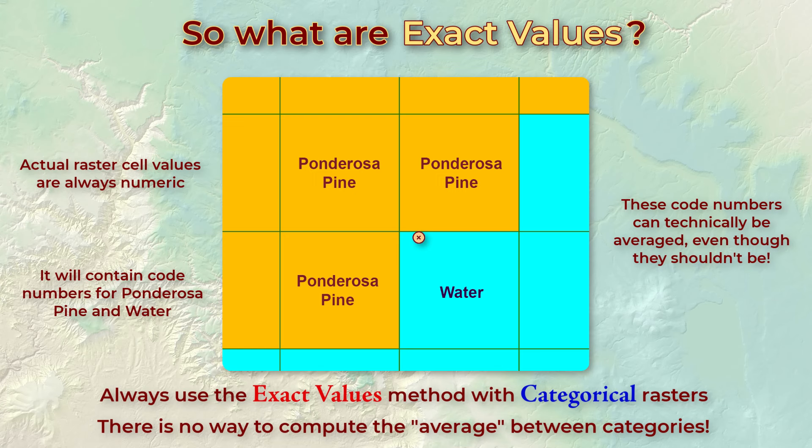So suppose ponderosa pine has a code value of 10 and water has a code value of 50. If you run an interpolation, you'll end up with a value around 21 or 22 at this point, with a lot of decimal points after it. And that almost certainly won't match any of the available land cover codes. You'll just end up with nonsense values that mean nothing. So never use bilinear interpolation with categorical rasters.